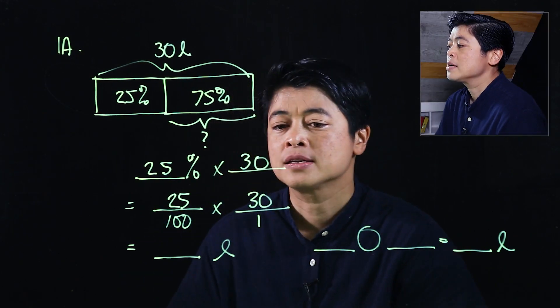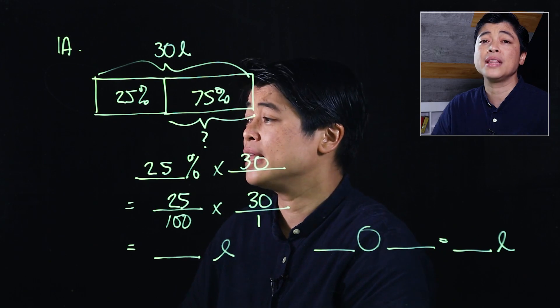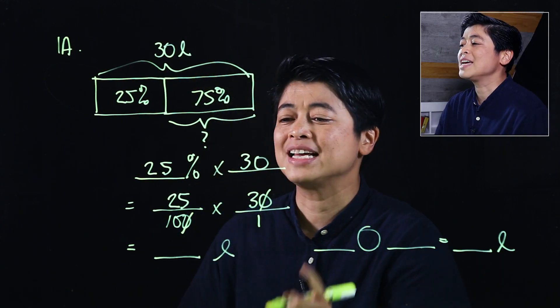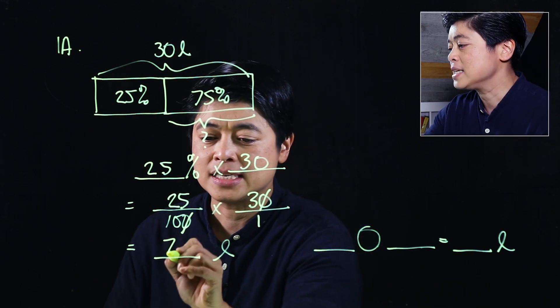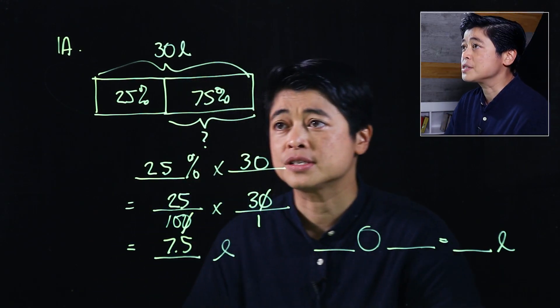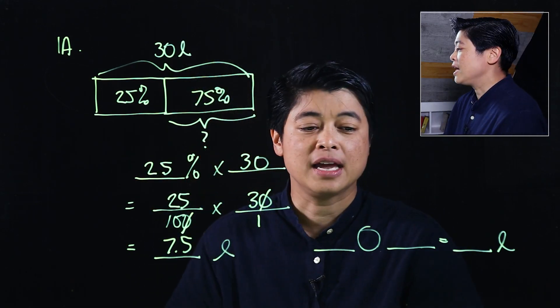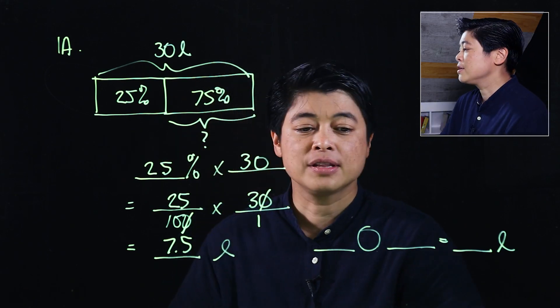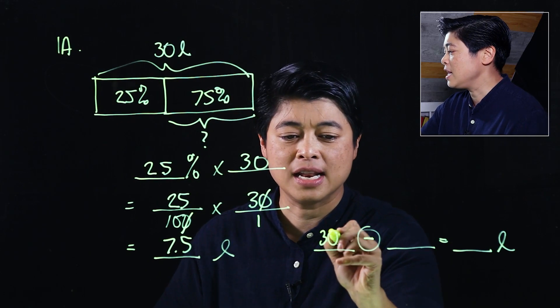Anything in the numerator can cancel with anything on the denominator, so I'll cancel that. That's 75 divided by 10, which is technically 7.5 liters. Right now there's 7.5 liters. What we need is how much more to fill, so this is a minus. 30 liters minus 7.5 liters should give us 22.5 liters. That's the book's approach.